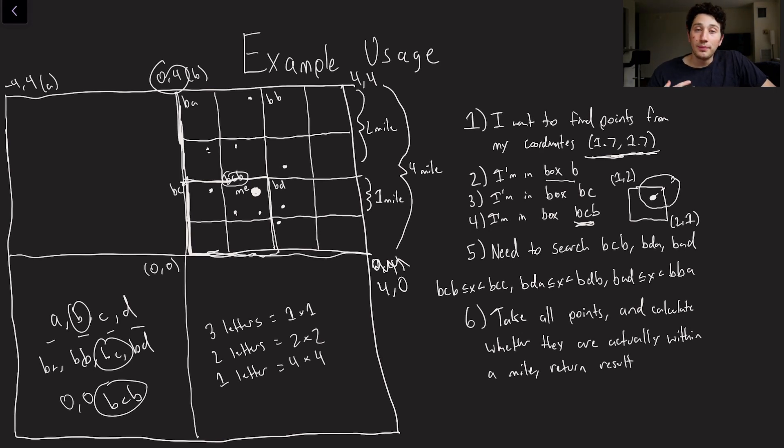So just due to the way that our geohashes are laid out, we can actually easily figure out that the boxes that are next to mine are going to be, first of all, BAD over here because our radius might stretch into it. And also in addition to that, we have BDA, so our radius is in there as well.